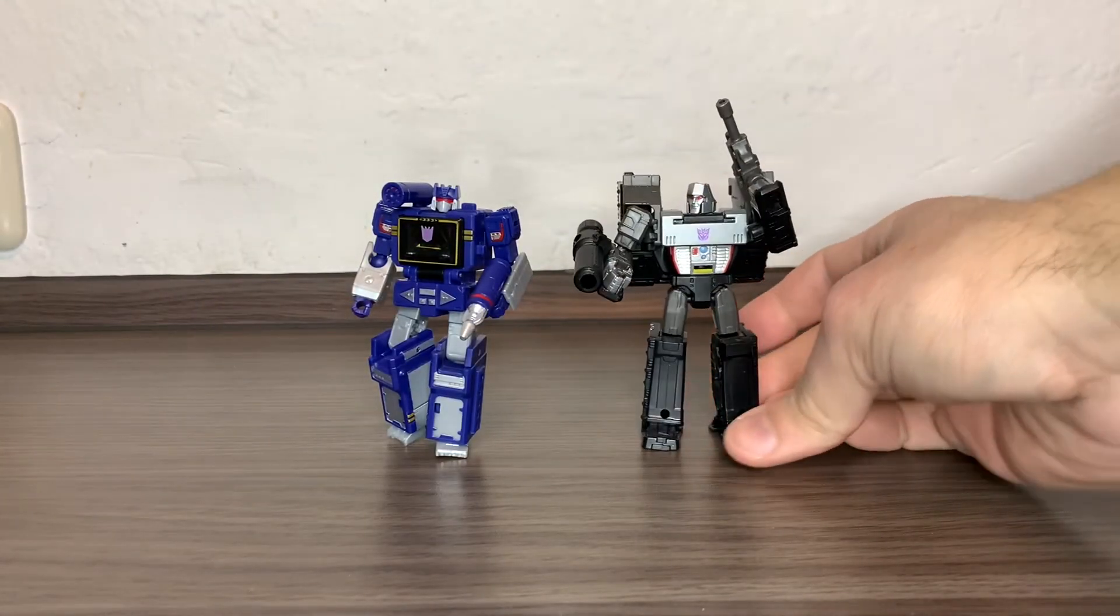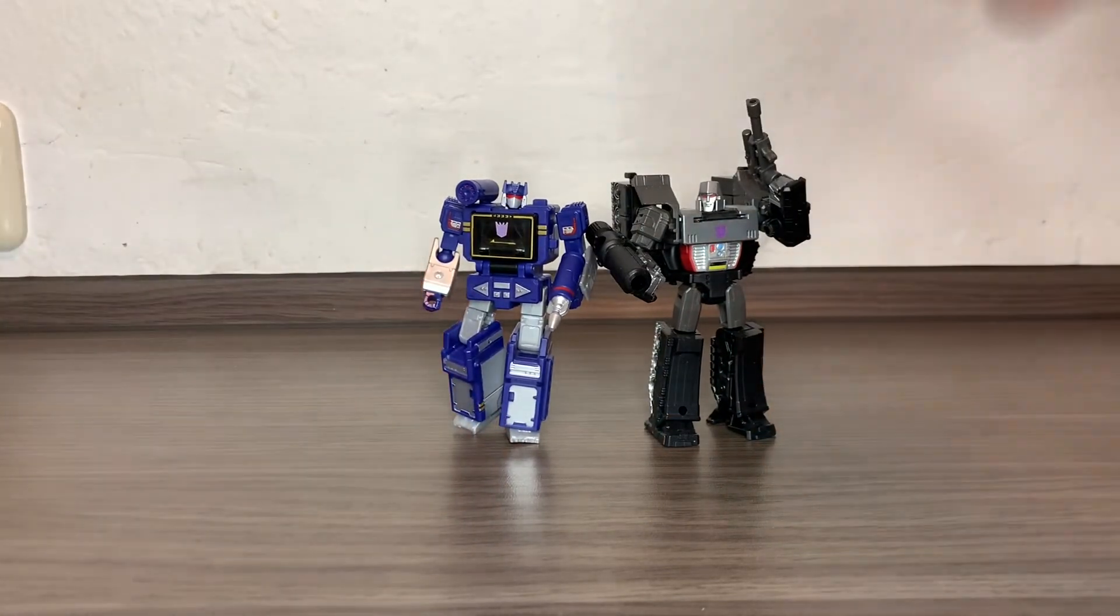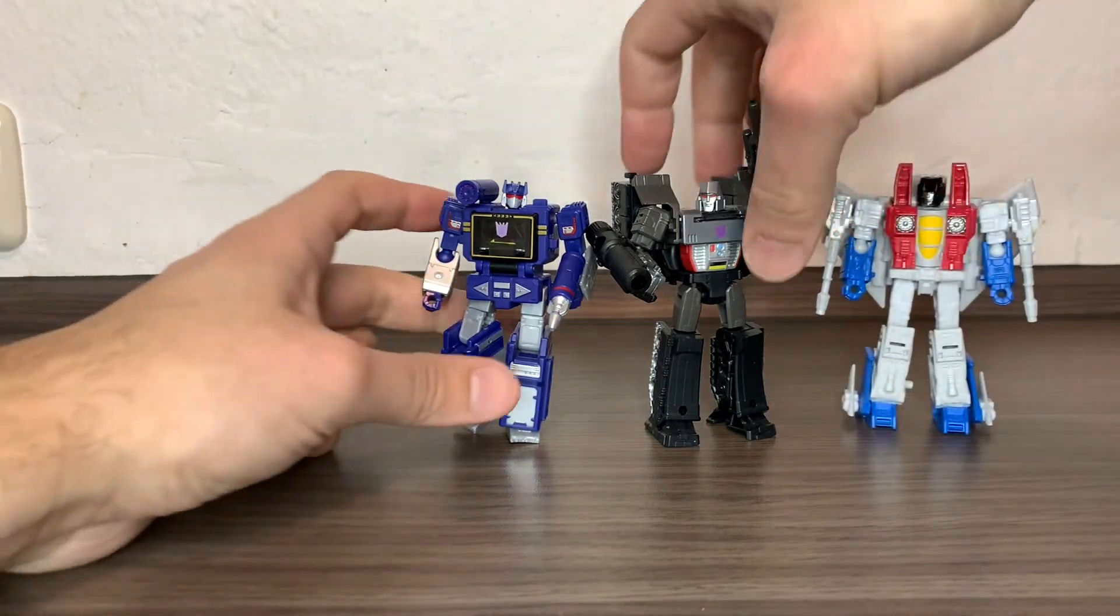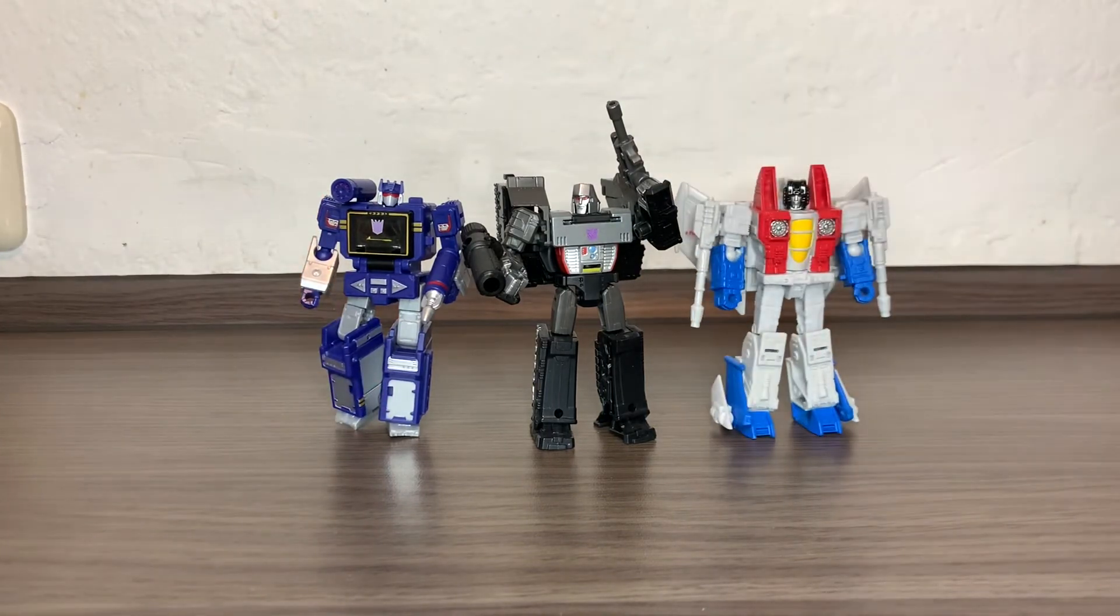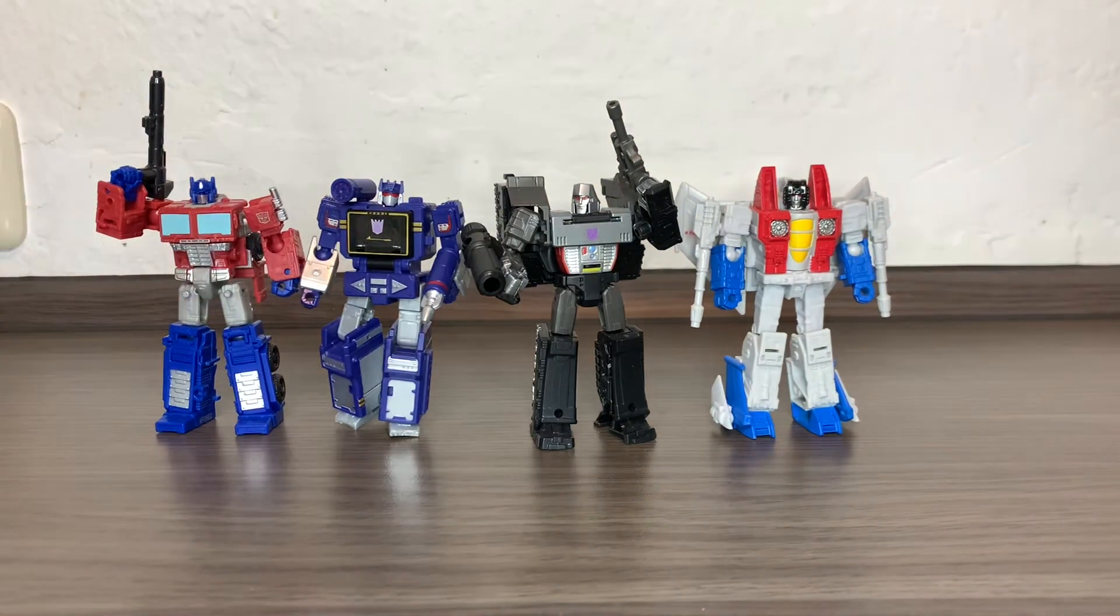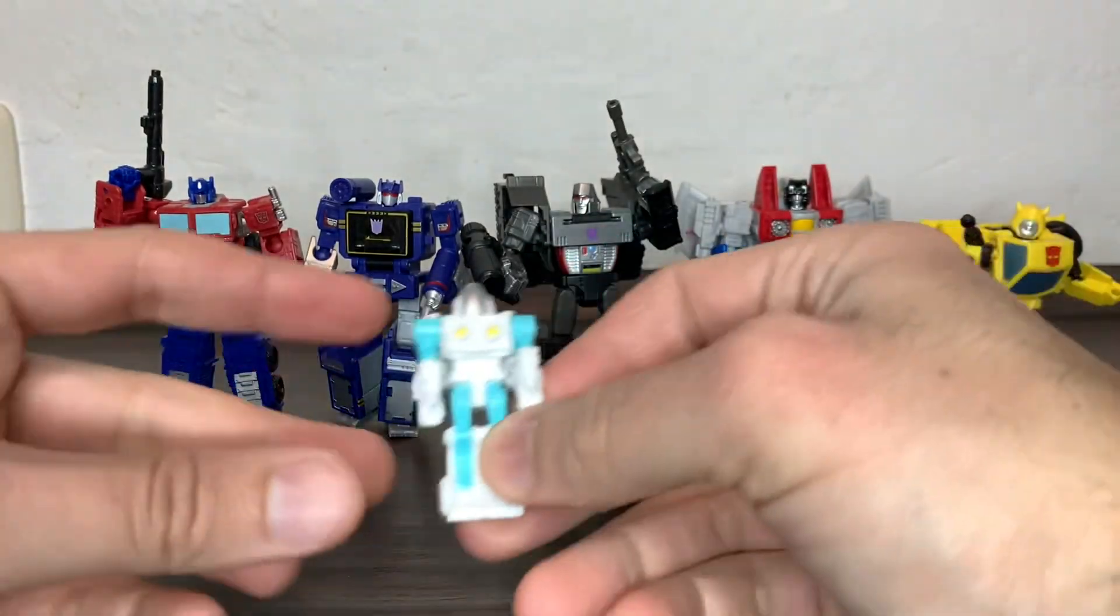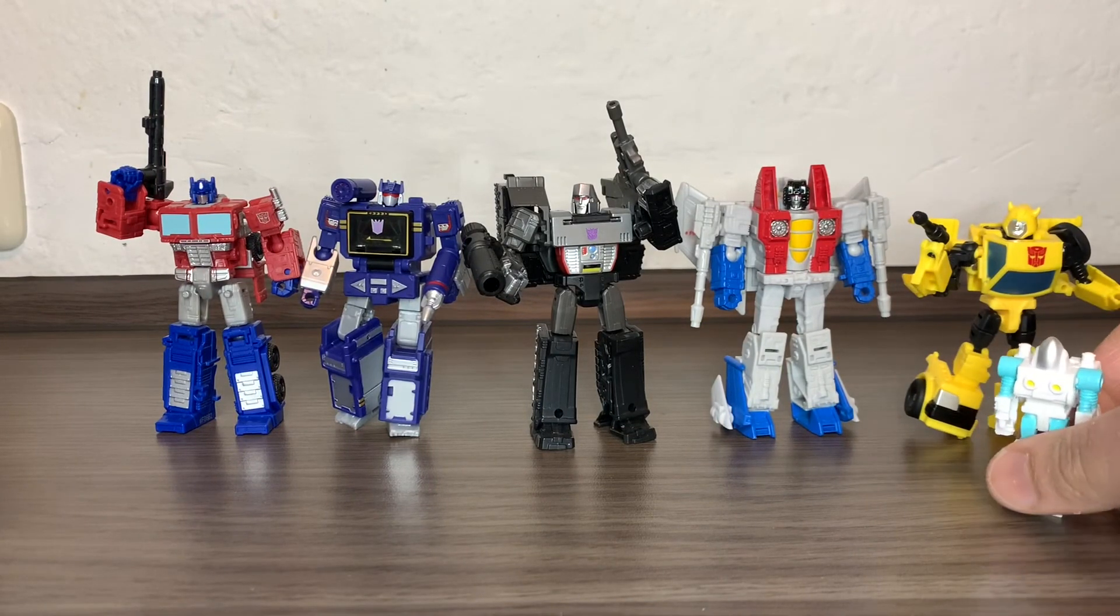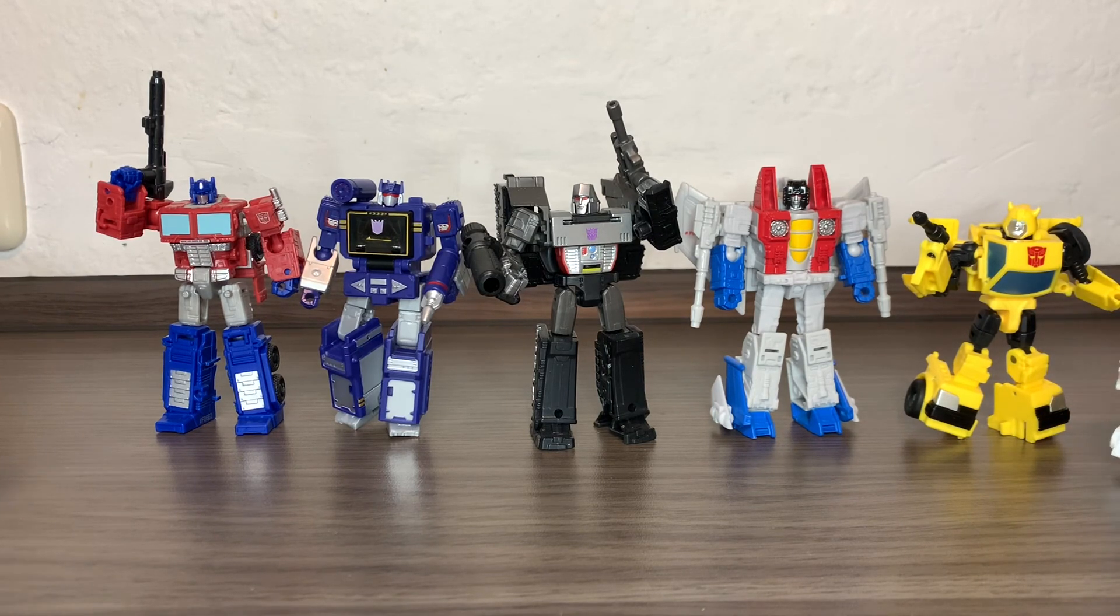First I'm bringing in Core Class Megatron because he's loyal to Megatron. Then we bring in Core Class Starscream because we need to have the trio here. Then we bring in Core Class Optimus Prime, and Bumblebee. It's a very nice figure. I can highly recommend it. Please leave a like and subscribe to the channel, and I will see you in the next one. Ciao ciao ciao.